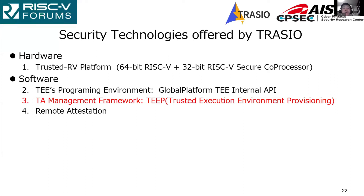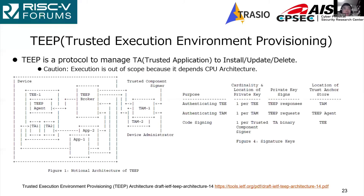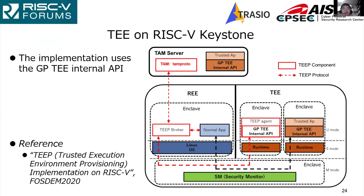The third solution is the TA management framework. A TA management framework is proposed by IETF as TEAP — Trusted Execution Environment Provisioning — a protocol to manage installation, update, and deletion of a TA. On each device, there are a TEE agent in TEE and a TEE broker in REE. On the server, there is a TAM — Trusted Application Manager. These components use keys to certify the TEE, TAM, and trusted application. This figure shows our implementation on RISC-V Keystone, with details presented at HotTea 2020 by our colleague.